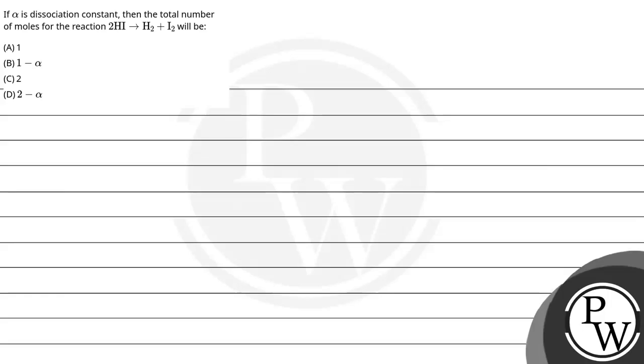Hello, let's see this question. The question says if alpha is a dissociation constant, then total number of moles for a reaction 2HI goes to H2 plus I2 will be.